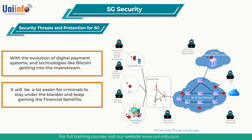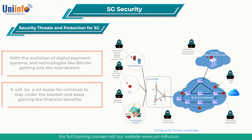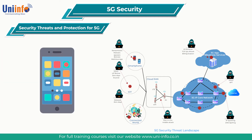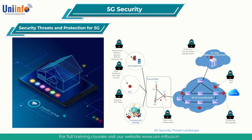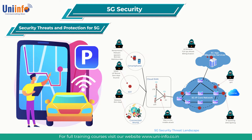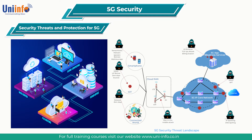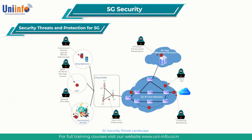The 5G threat vector will have no boundaries and will range from end-user equipment such as mobile phones, industrial items, sensors, home automation, automated cars, and enterprise networks to mobile networks. With such a larger threat landscape, as demonstrated in the figure, it will span from end-user devices to RAN, radio access network, to mobile core network, to the internet.